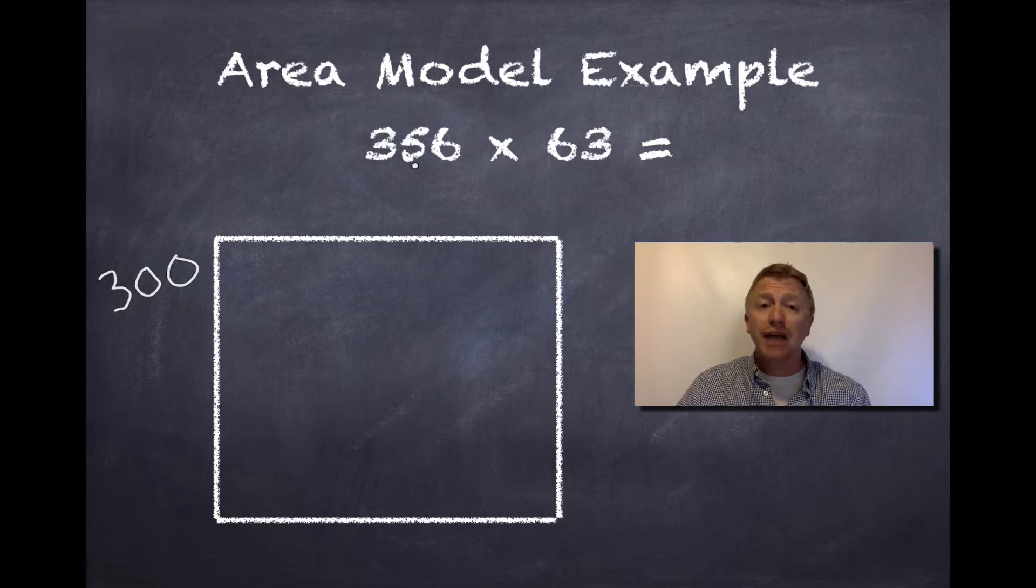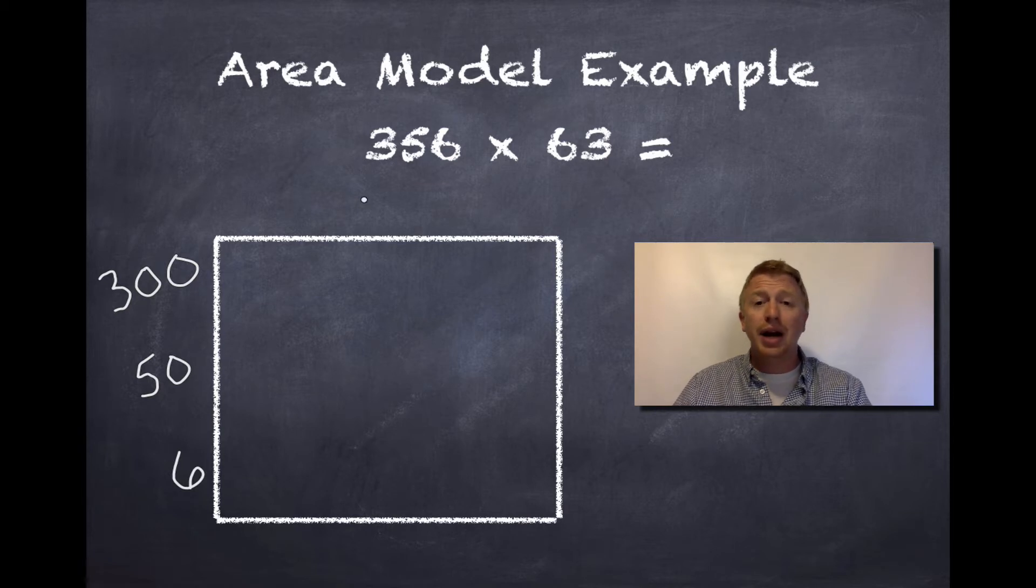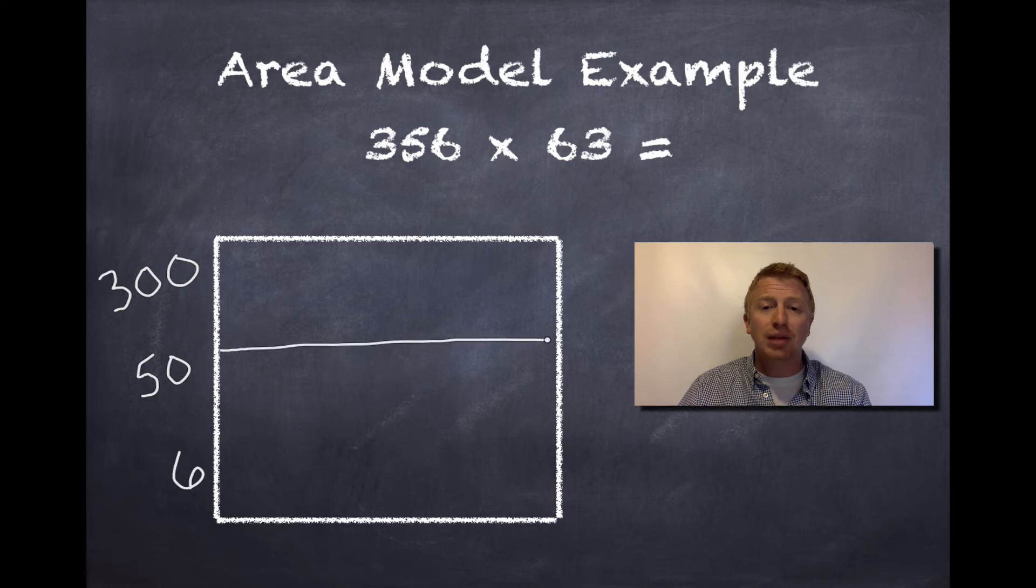What about the 5? The 5 is in the tens place, so it is actually worth 50. And last but not least, the 6 is just worth 6, because it is in our ones place. All right. Before I move to my 63, I want to break this up by lines. So, I'm going to put a line dividing my 300 and my 50, and one cutting right through my 50 and my 6.